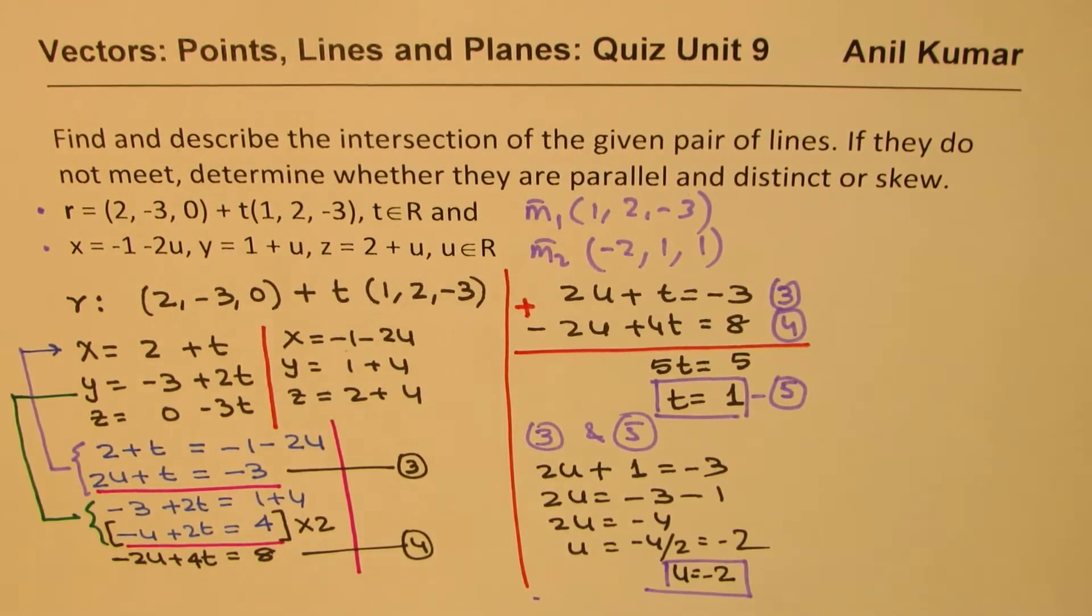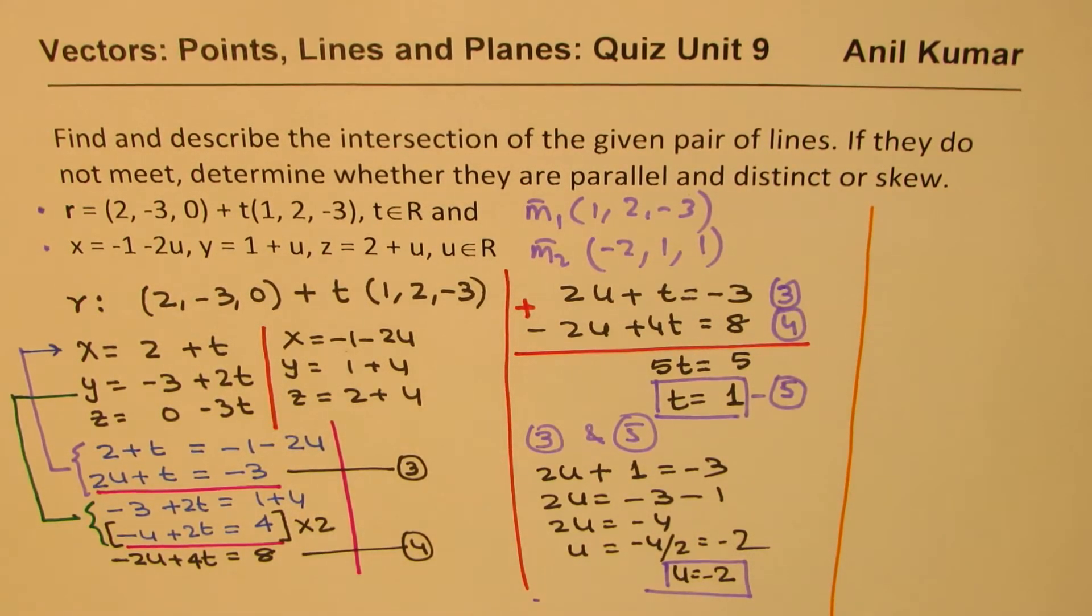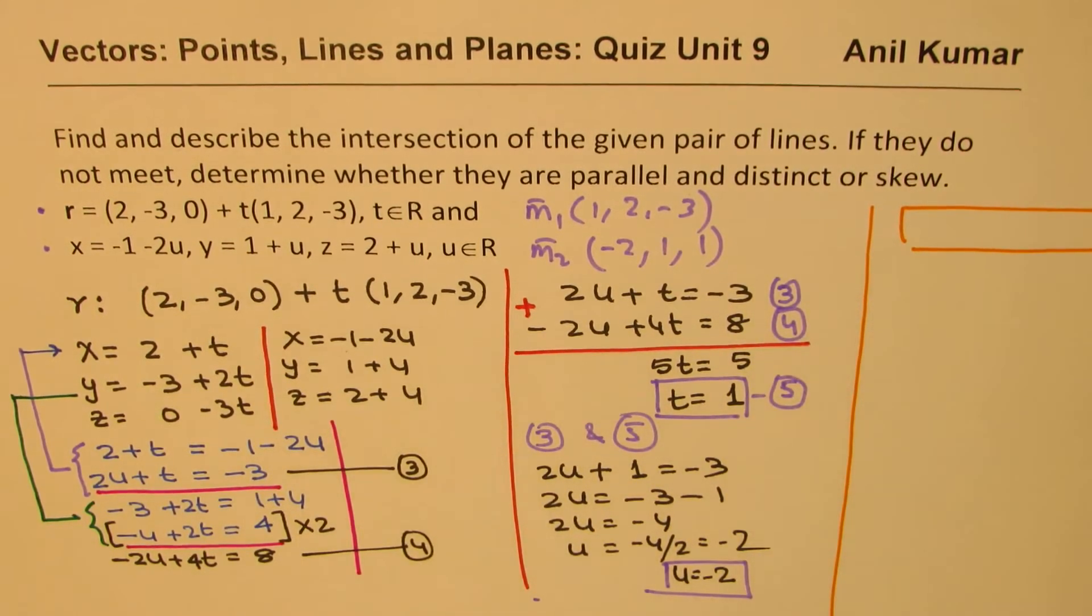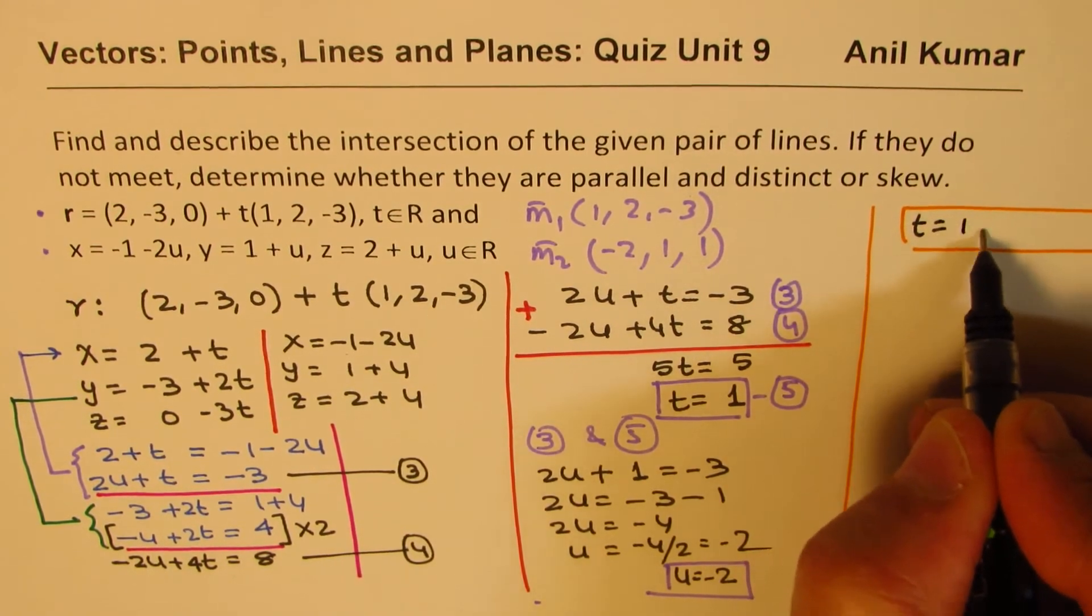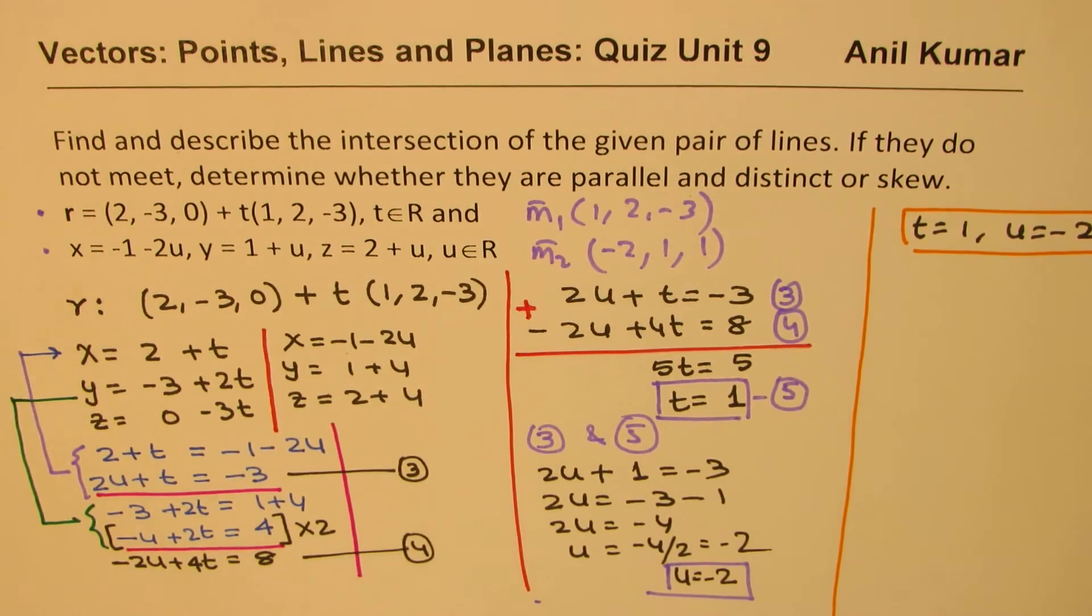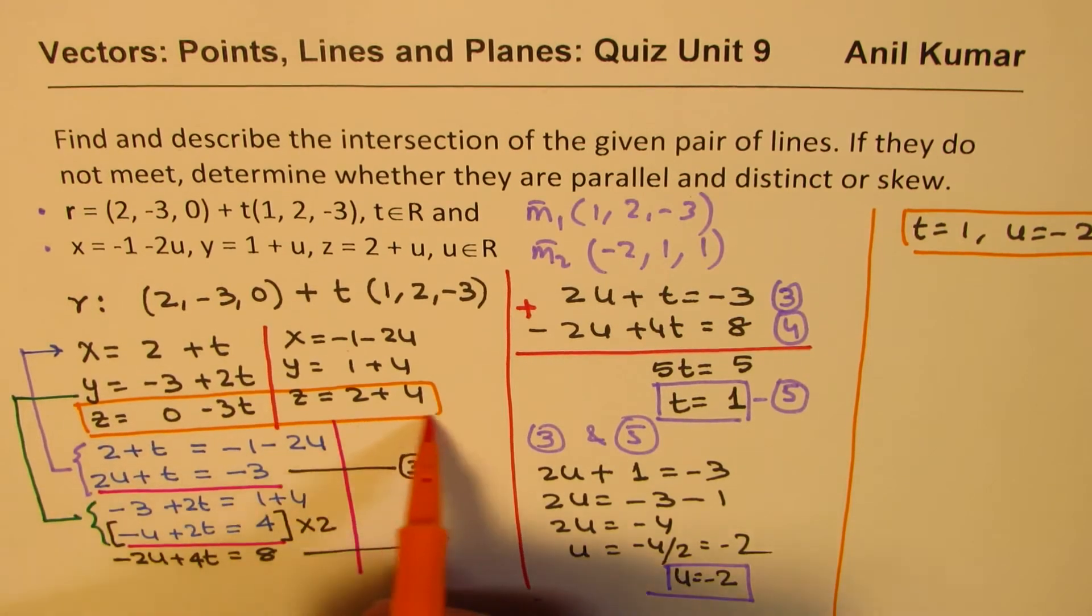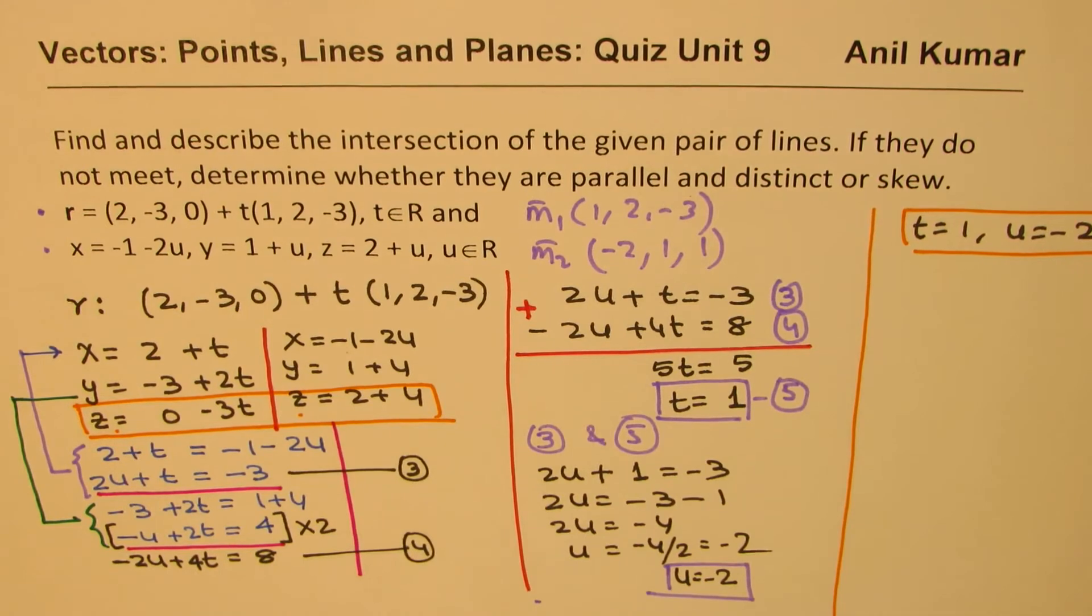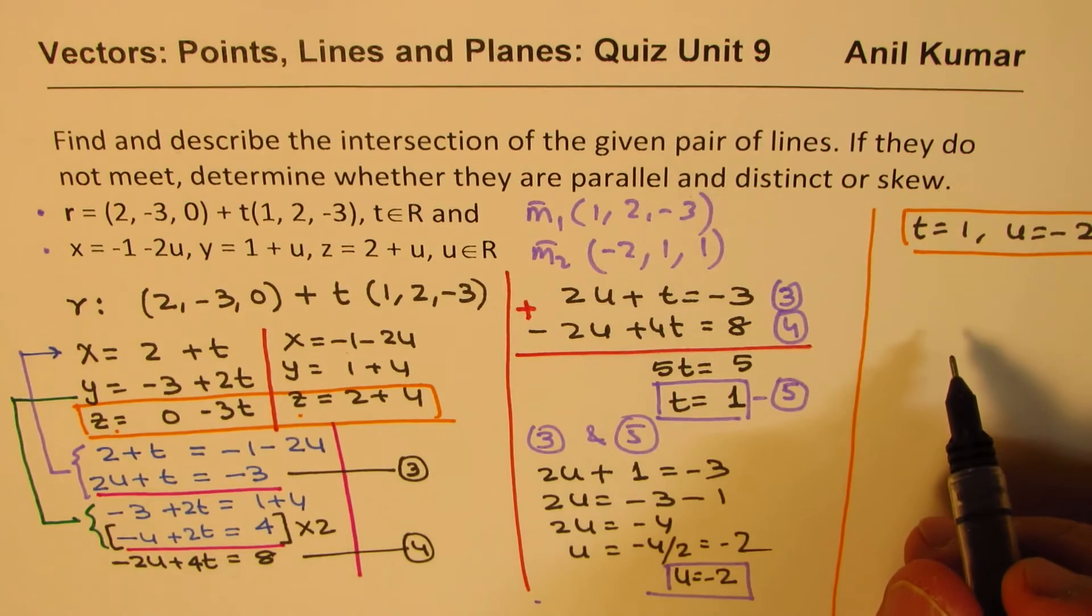Now, the idea here is that if the third equation is satisfied, then we have a solution. So what we found here is basically that from the first two equations that the value of t = 1 and the value of U = -2. Now, we shall substitute this in the third equation and check if Z coordinates are matching or not. Correct? So that's the whole idea. So let's check. If they are matching, then it's a point of intersection, otherwise not.